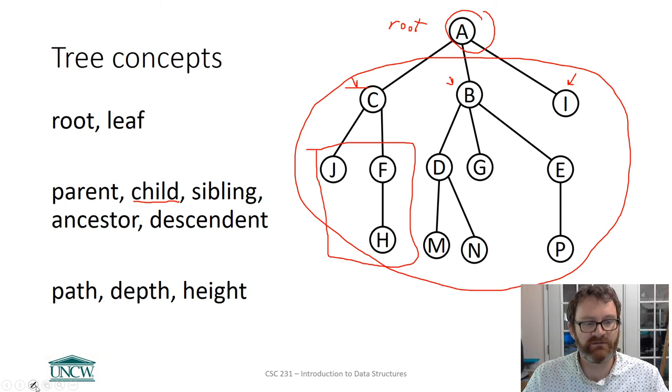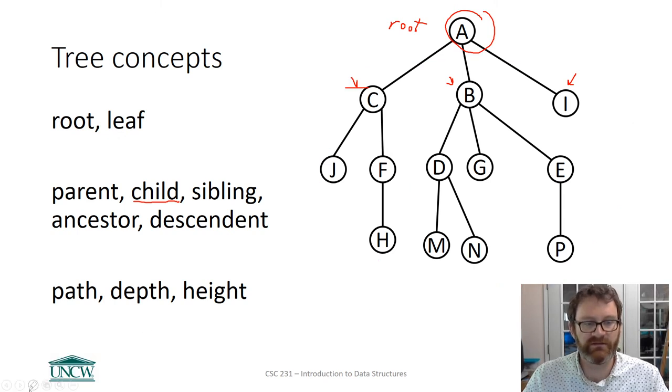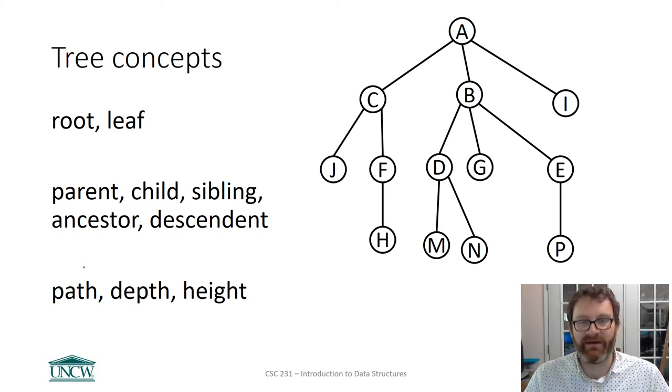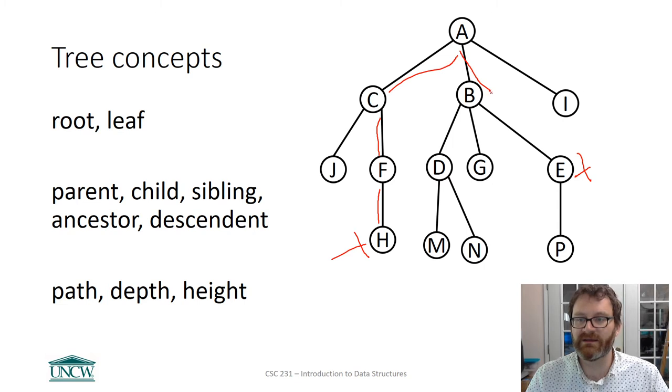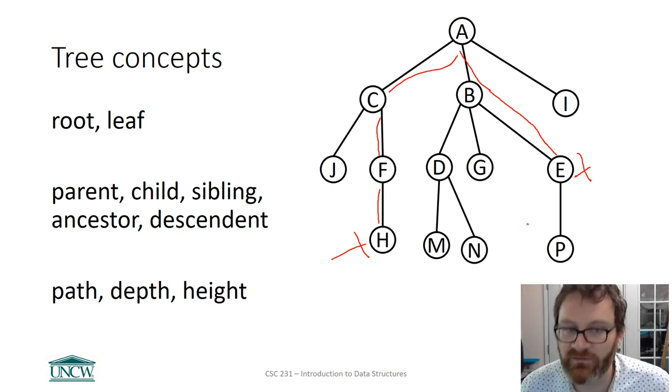Some more tree specific concepts. Let me erase what's on the slide here for a second. So some more tree specific terminology. Path. A path between two nodes is the list of edges that connect those nodes. So let's say we want a path from H to E. This is a tree. So there's only one path from H to E. That path is H to F, F to C, C to A, A to B, B to E. That's a path. There's going to be only one path for each pair of nodes. You just need to know that term path.